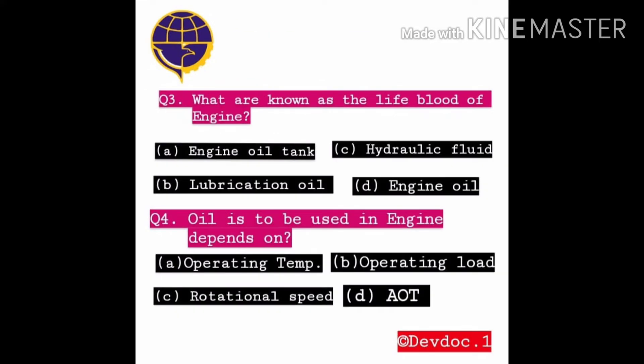Third question: What are known as the lifeblood of the engine? Option A: Engine oil tank, B: Hydraulic fluid, C: Lubricating oil, D: Engine oil. Fourth question: The oil to be used in an engine depends on — Option A: Operating temperature, B: Operating load, C: Rotational speed.